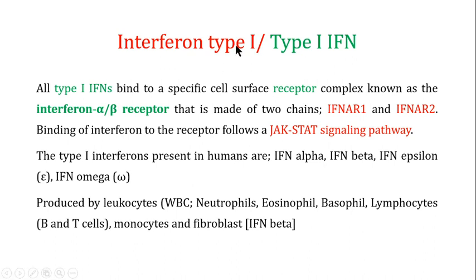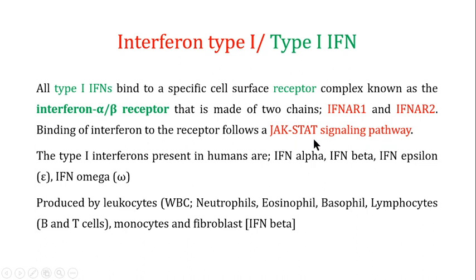All type 1 interferons bind to a specific cell surface receptor known as the interferon alpha-beta receptor. This receptor is made up of two chains: one known as interferon alpha receptor 1 and the other as interferon alpha receptor 2. When the interferons bind to this receptor, they activate a pathway known as the JAK-STAT signaling pathway, which we will discuss in detail.